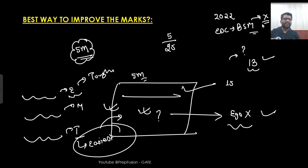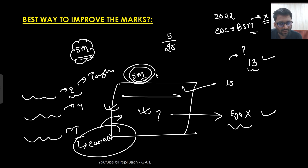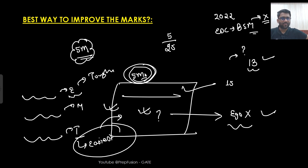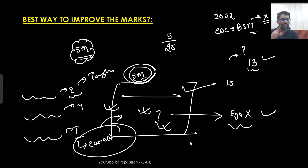Differentiating between easy, medium, or tough is actually a tough task. If you've studied in a good manner, every question will feel like you can attempt it. If you are able to identify it as a tough question, then you can drop it — otherwise proceed. My second suggestion: don't give more than 5 minutes to any question. If you are stuck, keep your ego aside, move to the next question, and once you finish the paper, come back — you'll solve it quicker and more efficiently.